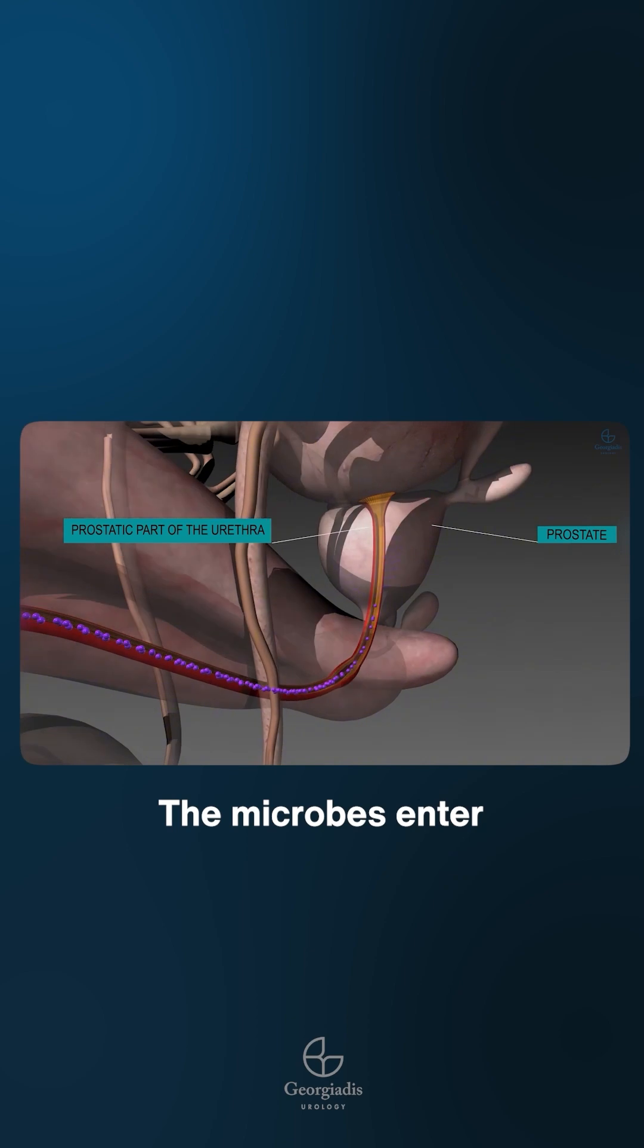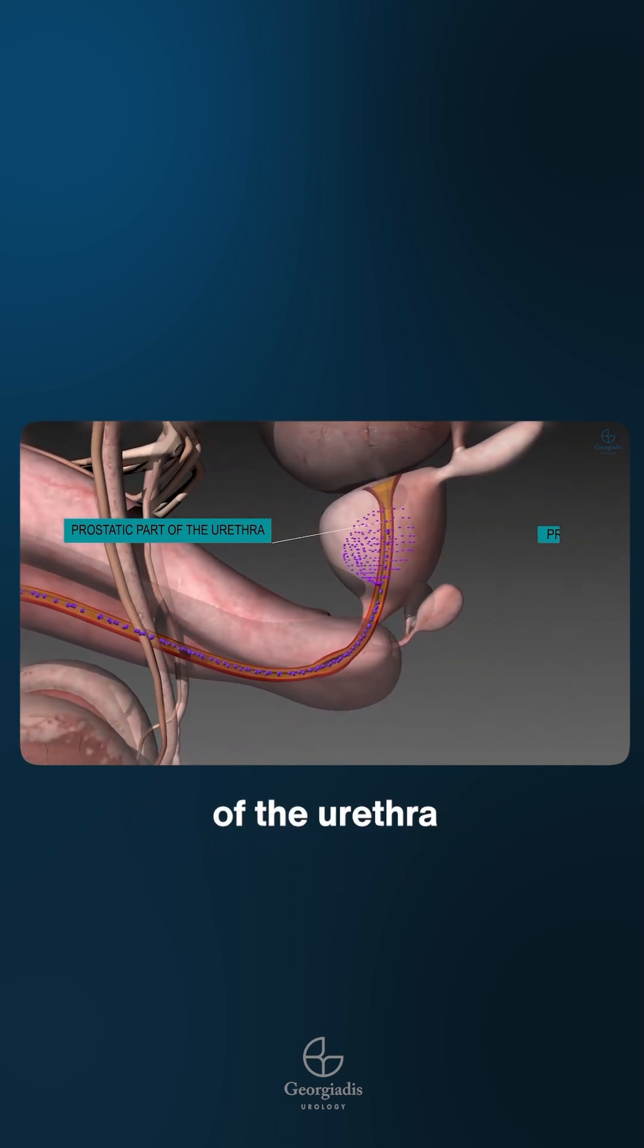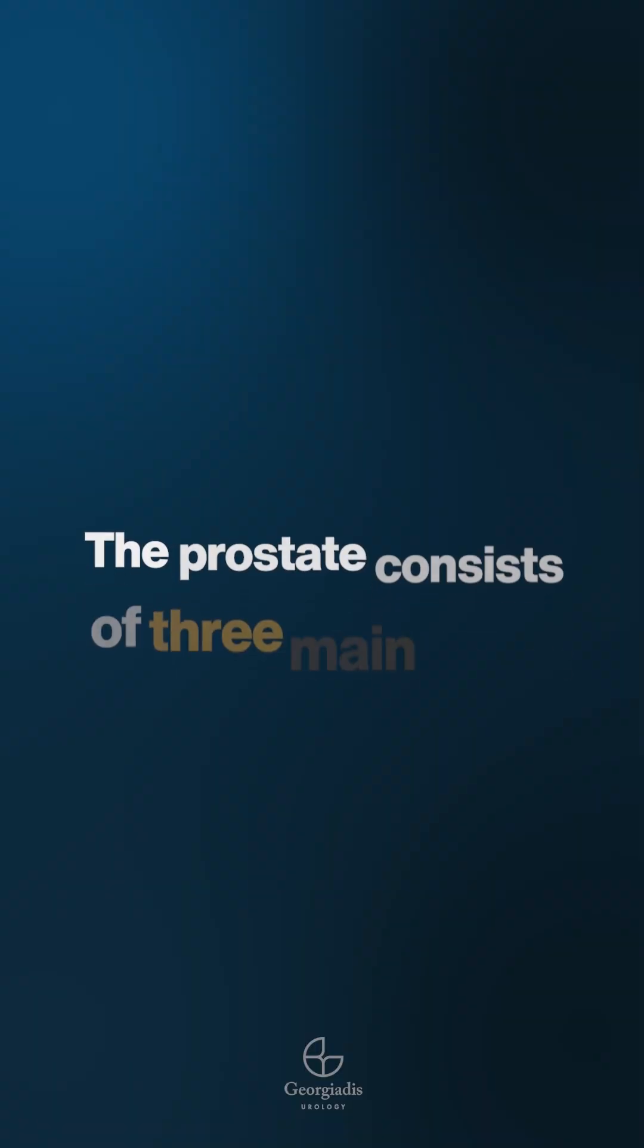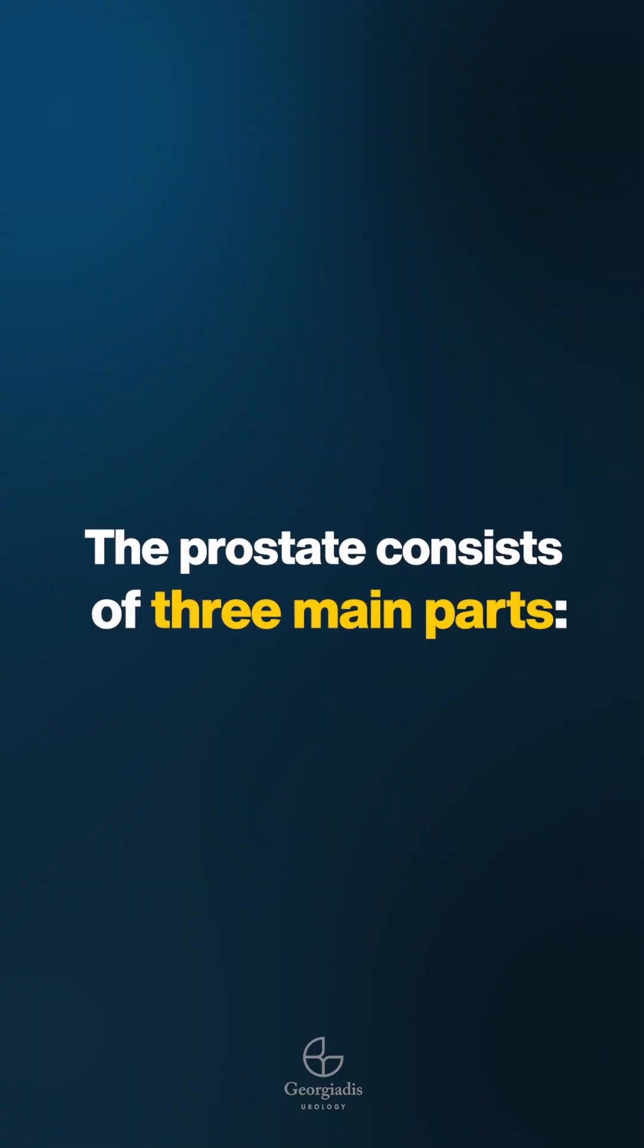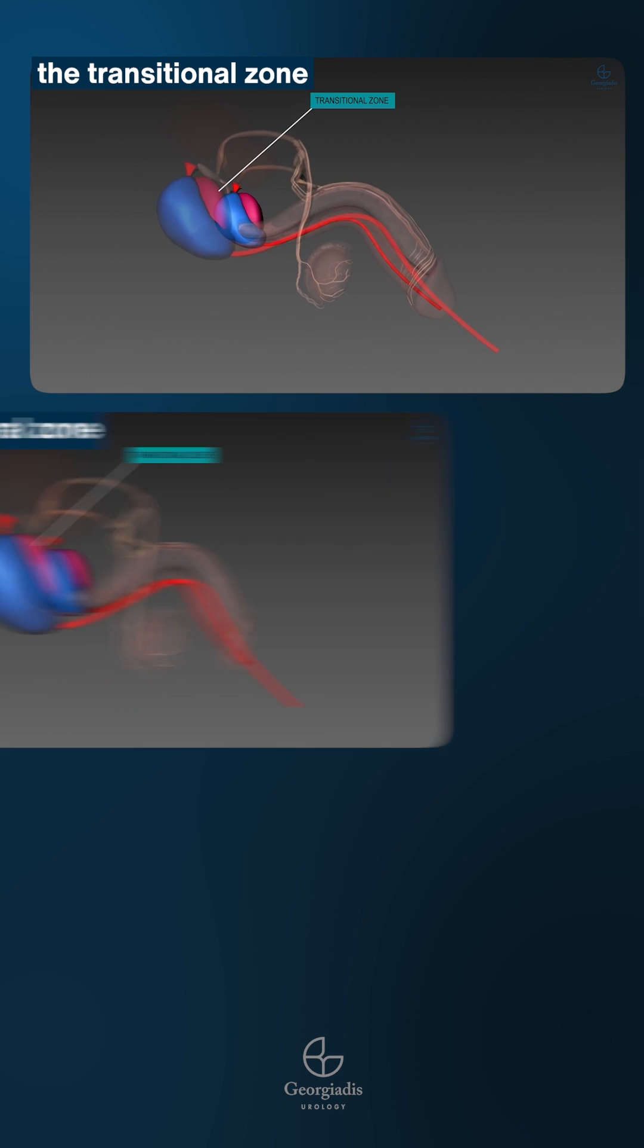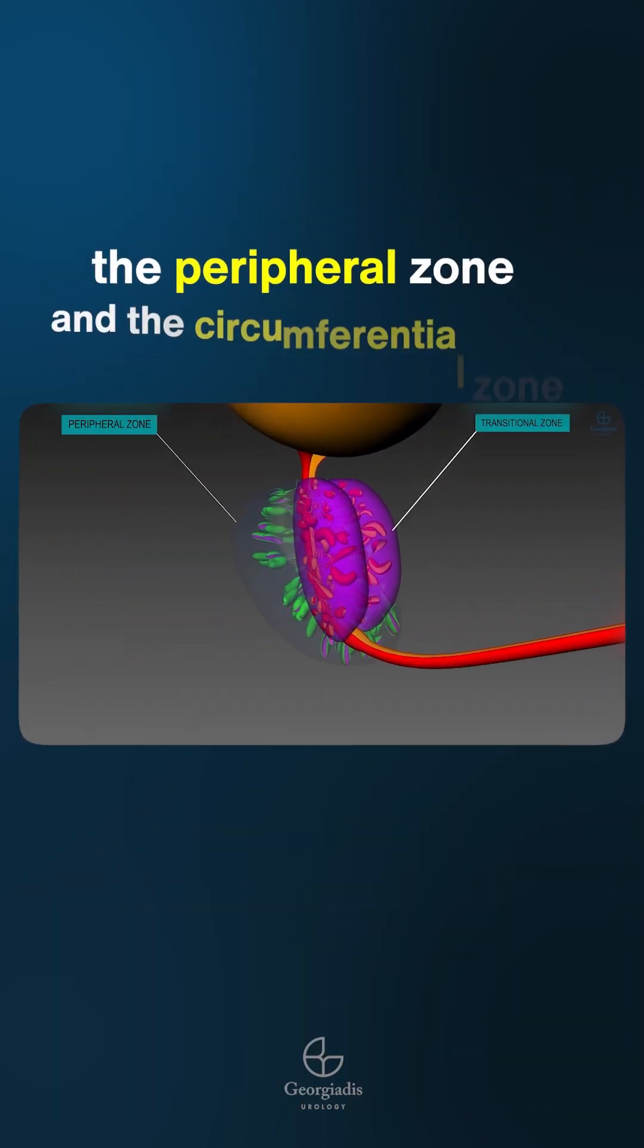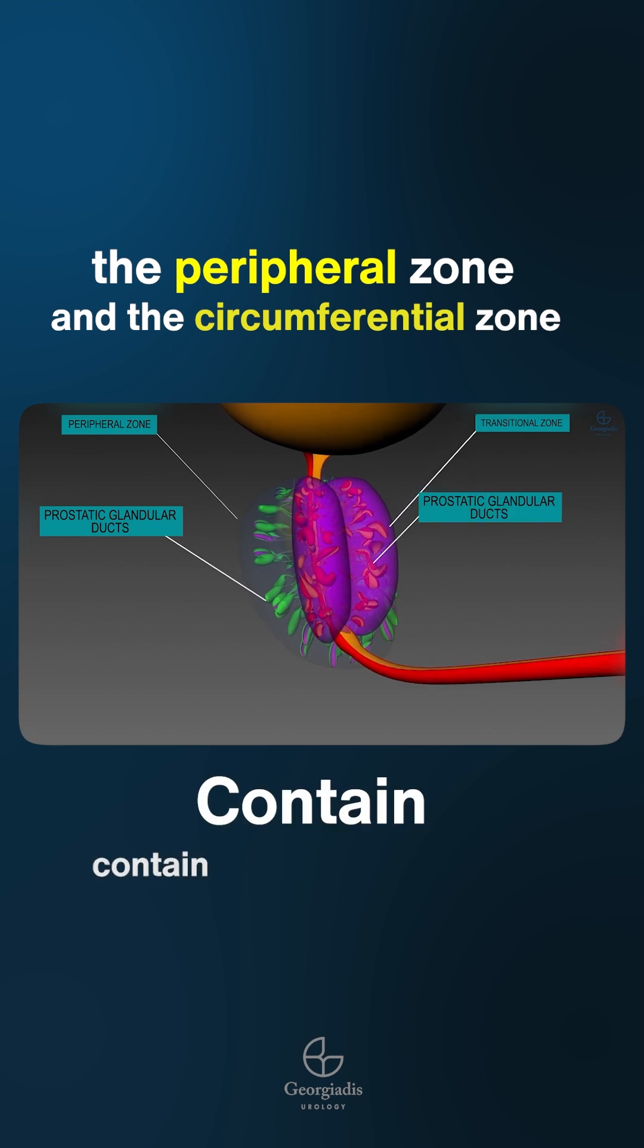The microbes enter the prostatic segment of the urethra, and then the infection of the prostate begins. The prostate consists of three main parts: the transitional zone, the peripheral zone, and the middle lobe. The peripheral zone and the circumferential zone contain the prostate glands.